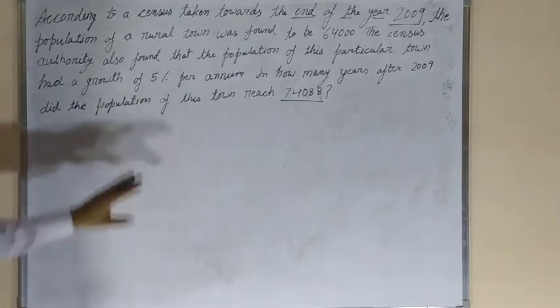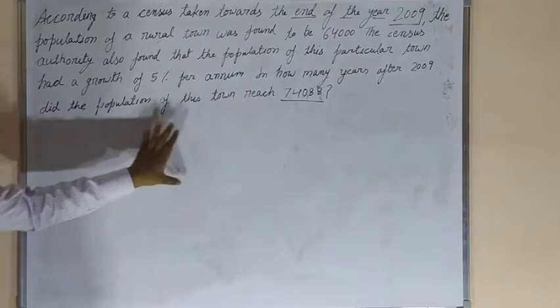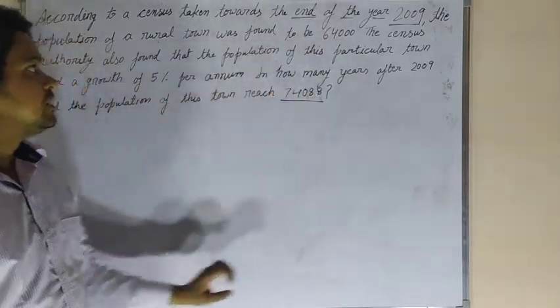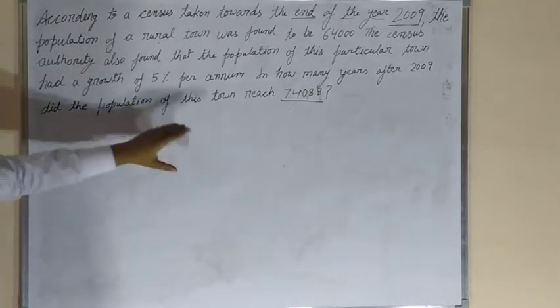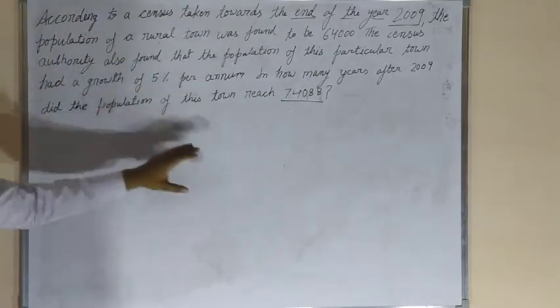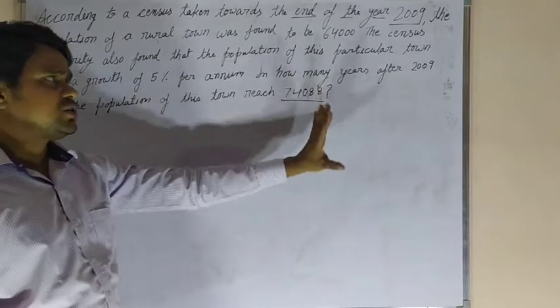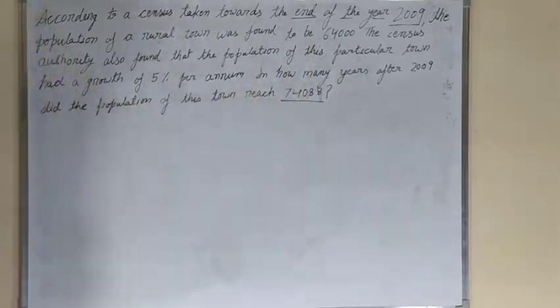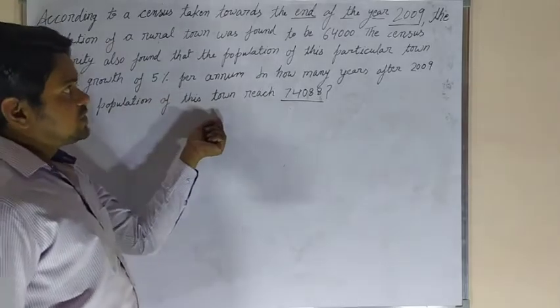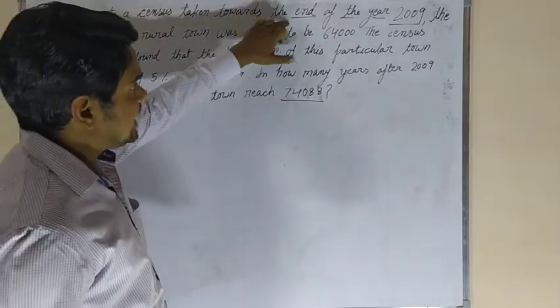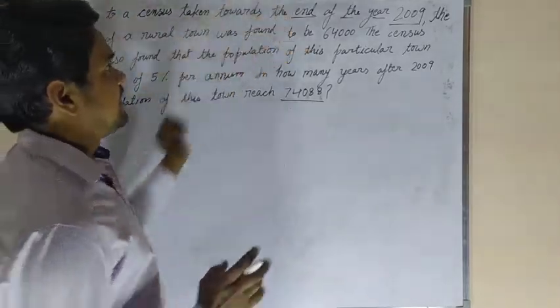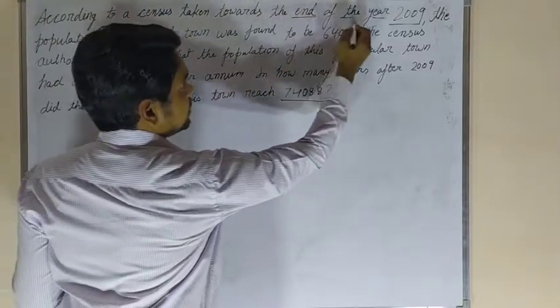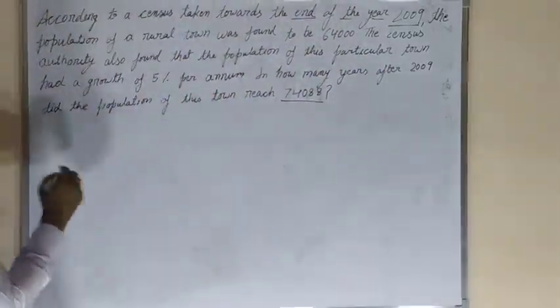This question is on population, but it is solved on the basis of compound interest (CI) concept, a simple CI concept. In this type of question, time must be clarified. Here, what does 'end of the year' mean?